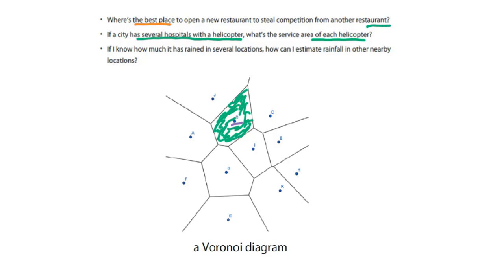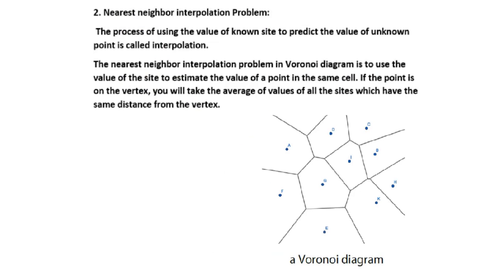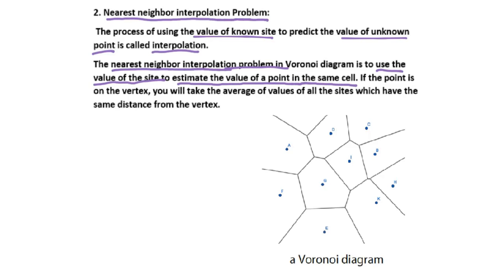The third question: if I know how much it has rained in several locations, how can I estimate rainfall in other nearby locations? We call this kind of problem the nearest neighbor interpolation problem. What is interpolation? When you use the value of a known site to predict the value of an unknown point, that is interpolation. The nearest neighbor interpolation in a Voronoi diagram uses the value of the site to estimate the value of a point in the same cell. If the point is on a vertex, you take the average of the values of all sites that have the same distance from that vertex.